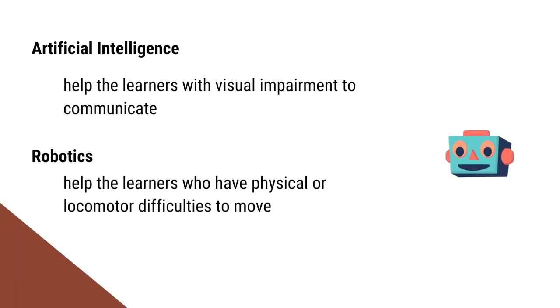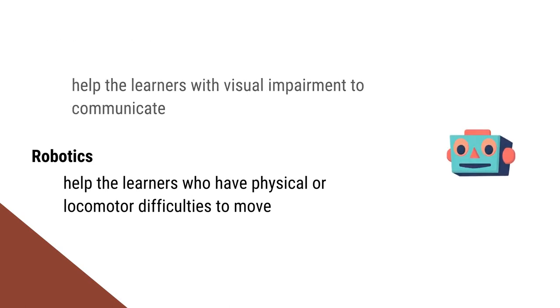Artificial intelligence can help learners with visual impairment communicate through visionless communication. Similarly, robotics can be used to help learners with physical or locomotor difficulties in moving around the campus and doing their day-to-day activities. If we can assure support through different kinds of formats, then we can ensure the access, retention, and success of learners with disabilities in open and distance learning system.